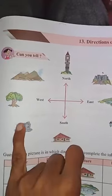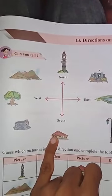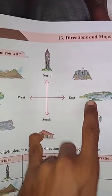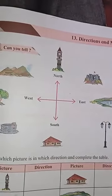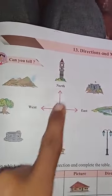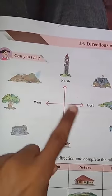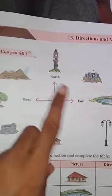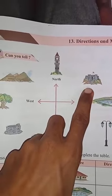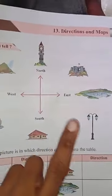The trees are in the West direction and the house is in the South direction. The pond is in the East and the street clock is in the North. In between North and West there is a mountain - the mountain is in the Northwest direction.